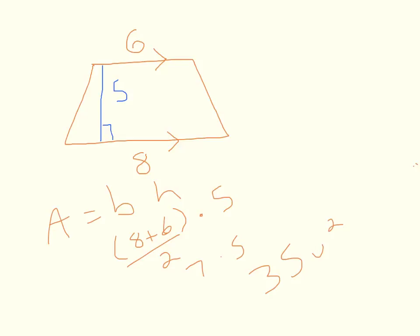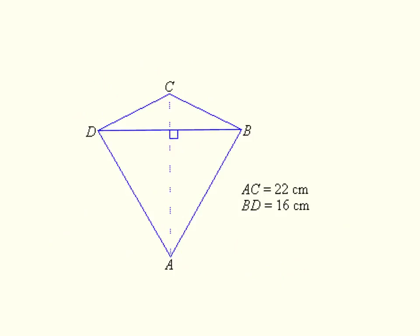For a trapezoid, because bases are different, just take the average of the bases, the arithmetic mean is another way of saying it, add them together, divide it by 2. A kite is our final shape, and now we're running into problems with the formula, because there are no bases. There are no parallel sides. So, what do we do with it?